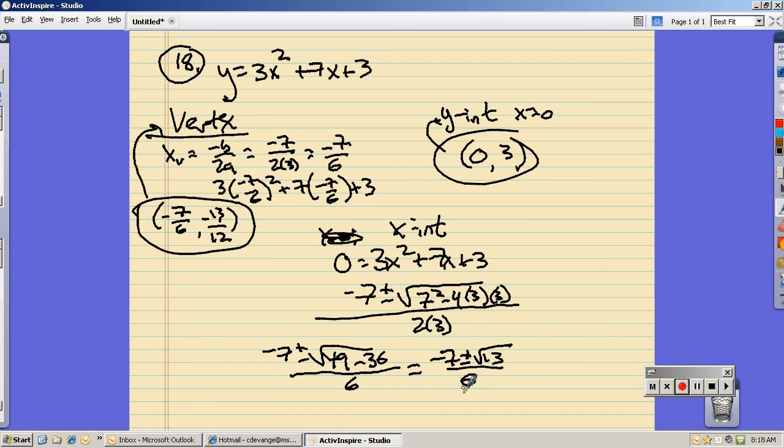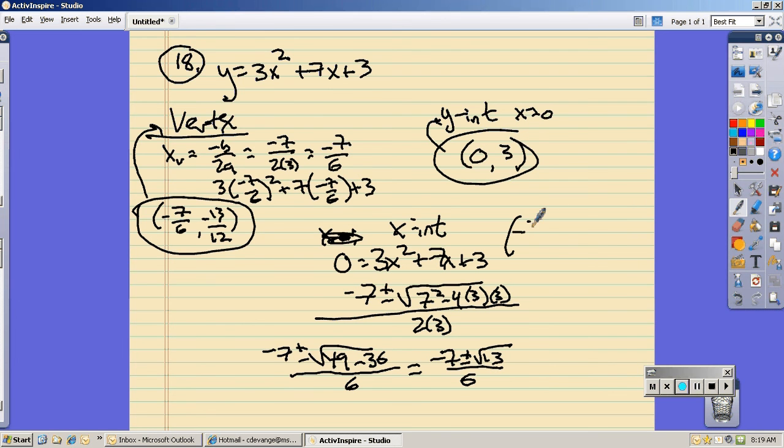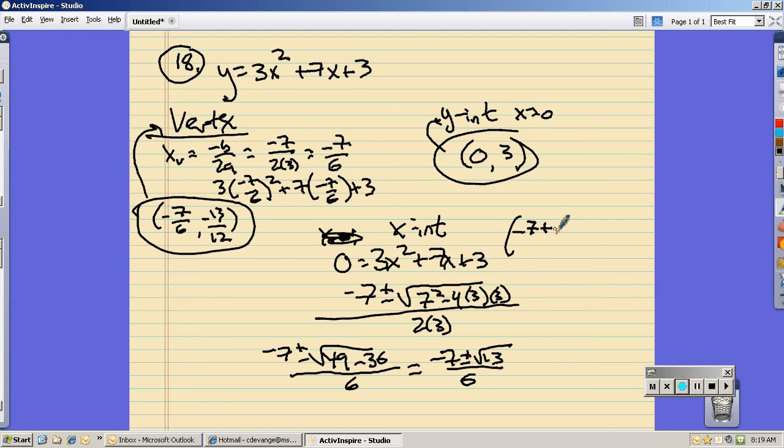So, there they are. One of them is this point. Oh, it's not legible. Sorry. Negative 7 plus root of 13 over 6 is 0. Negative 7 minus root of 13 over 6 is 0. Those are points.